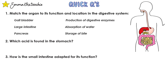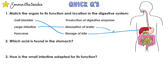Time for the quick questions. Question one: match the organ to its function and location in the digestive system. The gallbladder is responsible for the storage of bile — it's the tiny little green one. The large intestine is responsible for the absorption of water — it's the big pink spongy looking one on the outside. Finally, the pancreas is for the production of digestive enzymes — it's the little leaf-like looking one. Make sure all of your labels touch the organ they're describing.